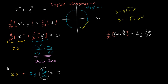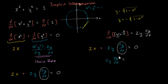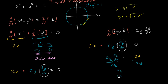So all we have to do at this point is solve for the derivative of y with respect to x. Let's subtract 2x from both sides, so we're left with 2y times dy/dx is equal to negative 2x. And then if we divide both sides by 2y, the 2's cancel out and we are left with the derivative of y with respect to x is equal to negative x over y. We didn't have to explicitly define y as a function of x, but we got our derivative in terms of x and y.